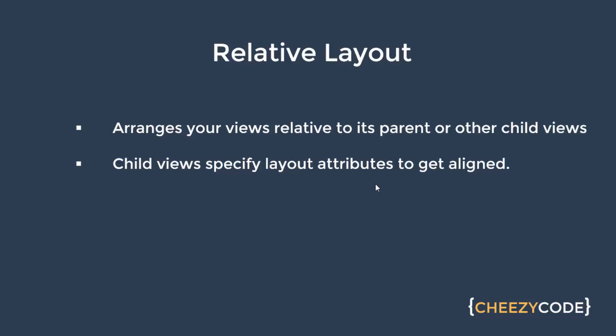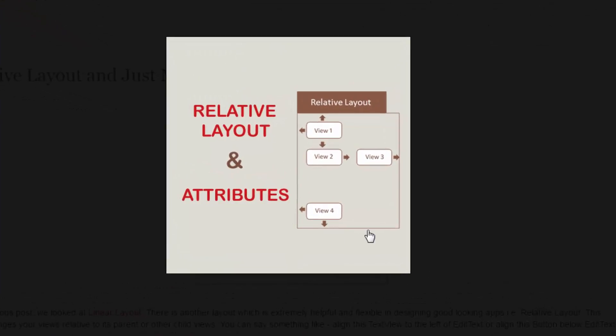Relative layout is used to arrange your views in a relative manner. You can arrange the views relative to their parent or with other views. In this image, the brown border represents a parent, and view 1 is relatively placed according to its parent — the left edge of view 1 is aligned with the left edge of the parent, and the top edge is also aligned with the top edge of the parent.